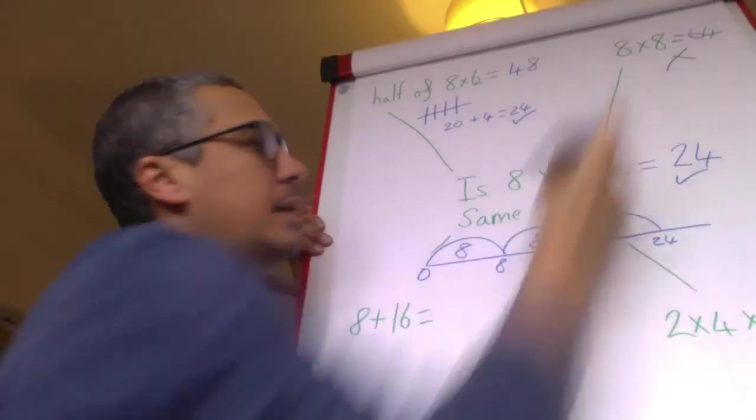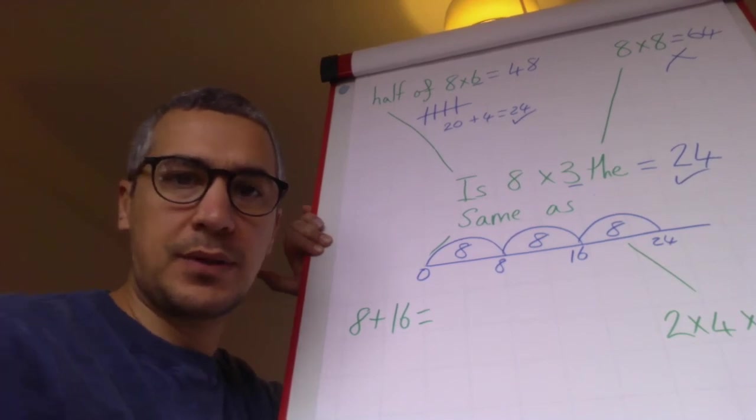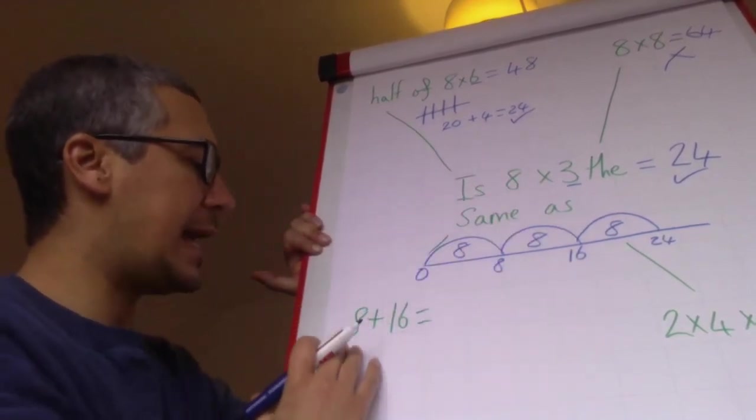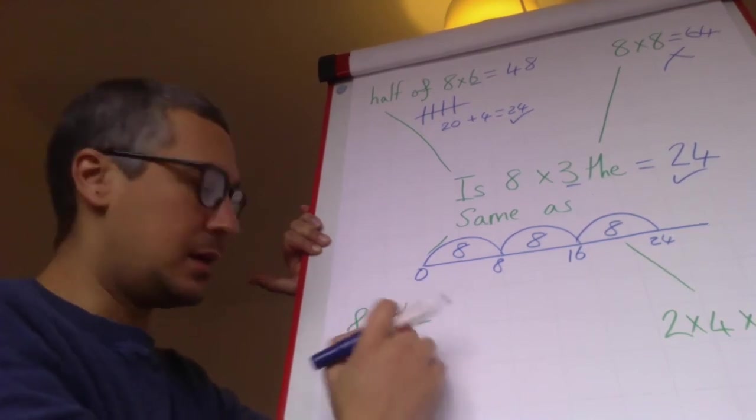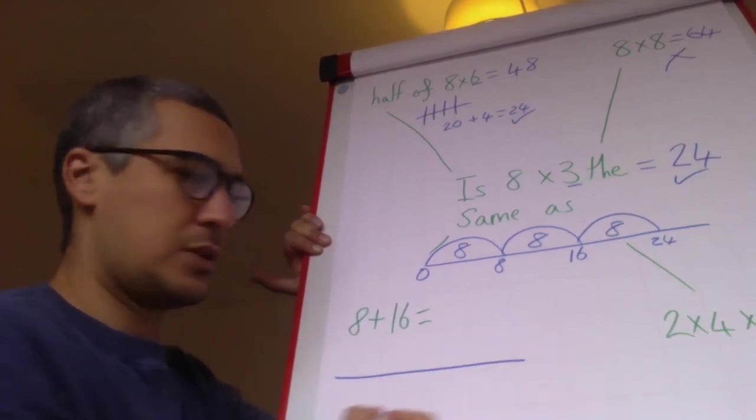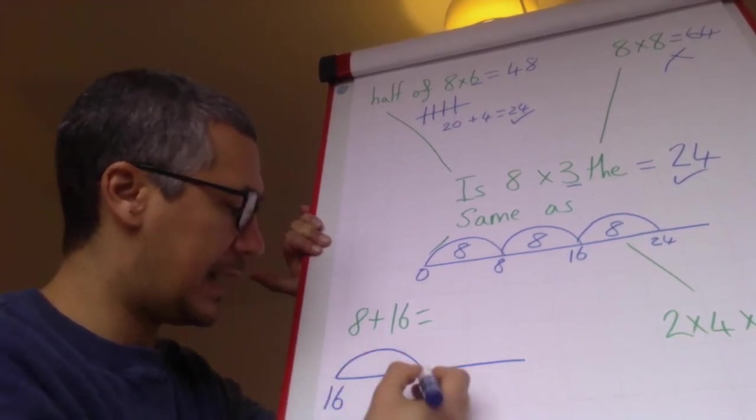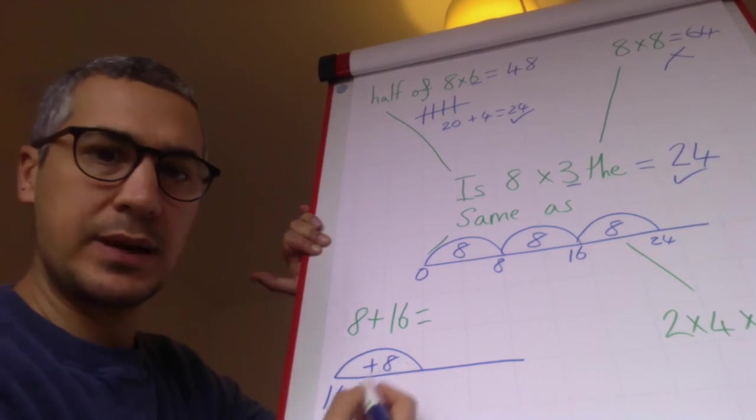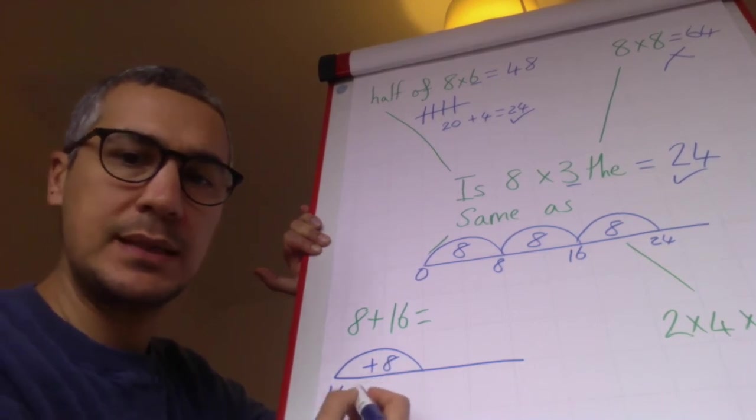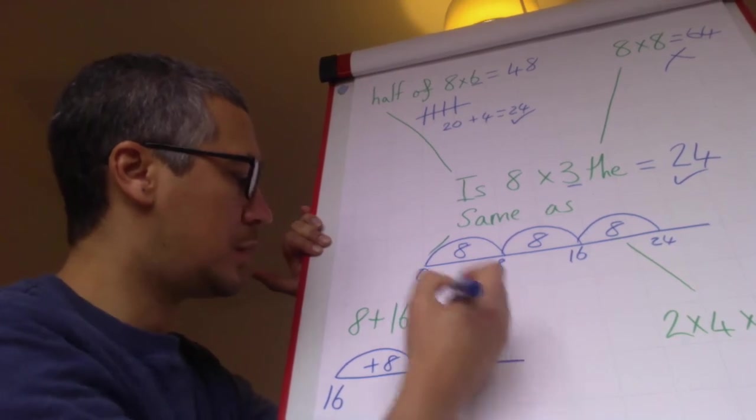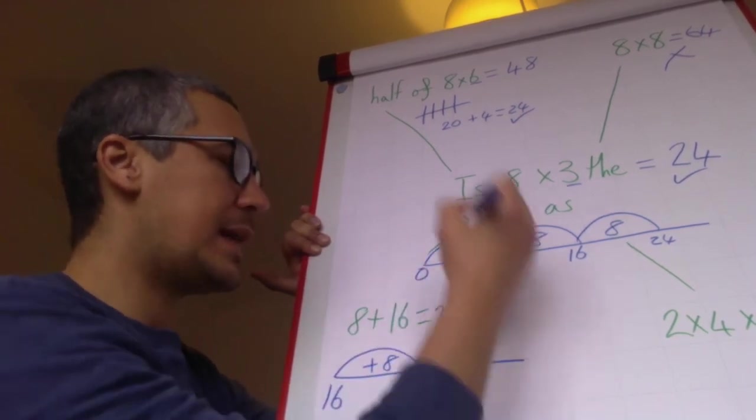Down here: is eight times three the same as eight add sixteen? I'll do a number line. The biggest number is sixteen. I add an eight to it. There's a four in the eight, so I add that to the sixteen—that equals twenty. There's four left over, so that equals 24. Yes, that is the same, absolutely right.